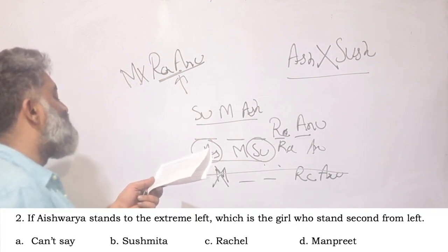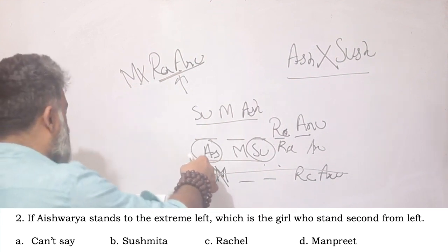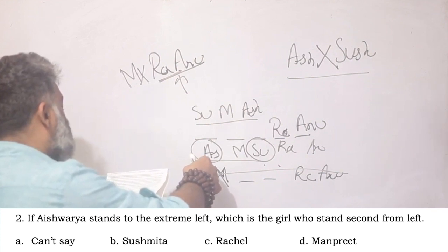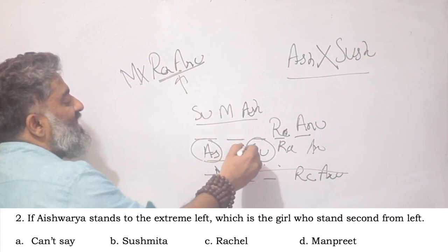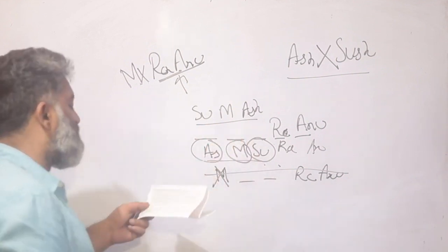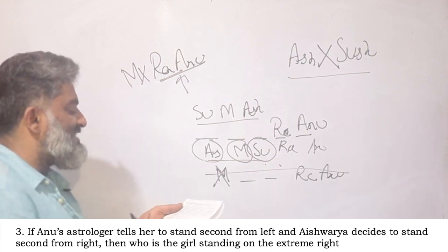The next question says if Aishwarya stands to the extreme left, still the same story. Which is the girl who stands second from left? So second from left, first from left and second from left. Now my answer would be Manpreet or option D. And now the last question.